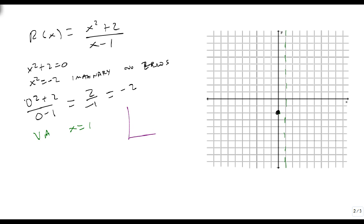For our last step, we perform the division. 1, 0, 2 with 1 on the outside gives me x plus 1 plus 3 over x minus 1. We ignore that remainder part, so all I have to do is graph this line.